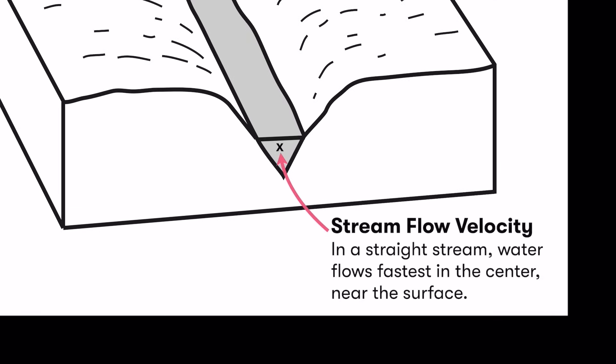If we look at a river channel with a V-shape, the fastest velocity within the river is not along the bed where water grinds against the ground, but up away from the bed — generally in the middle of the stream. In a straight-flowing stream, the fastest point is in the center, up away from the stream bed.